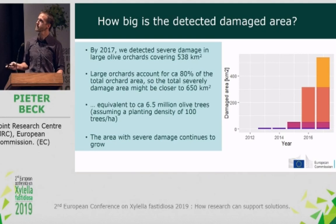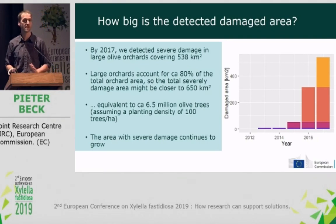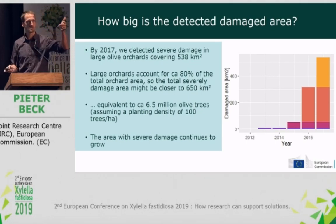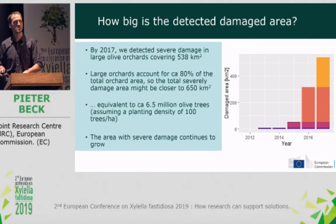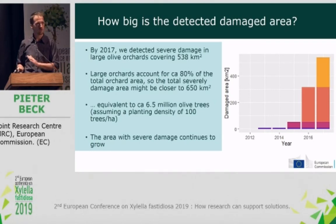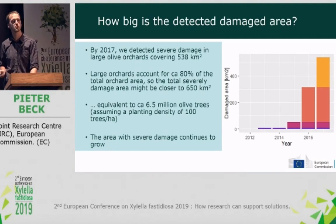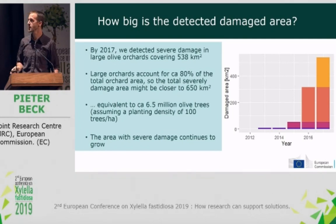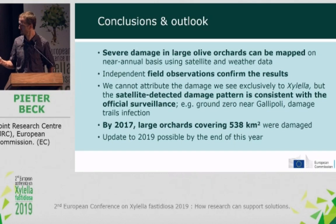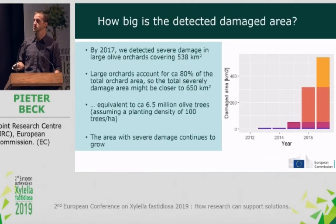How big is the detected damaged area? Counting all large olive orchards detected as damaged, we come to 438 square kilometers by the end of 2017. Adding roughly 20% for smaller orchards gives approximately 650 square kilometers of damaged area. Using aerial photographs and an approximation of 100 olive trees per hectare, that comes to about 6.5 million trees in heavily damaged orchards. That area is growing steadily and there's no sign of it slowing down.